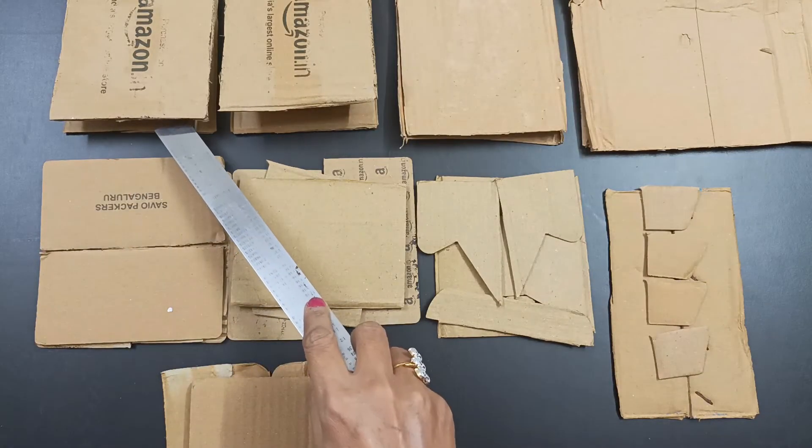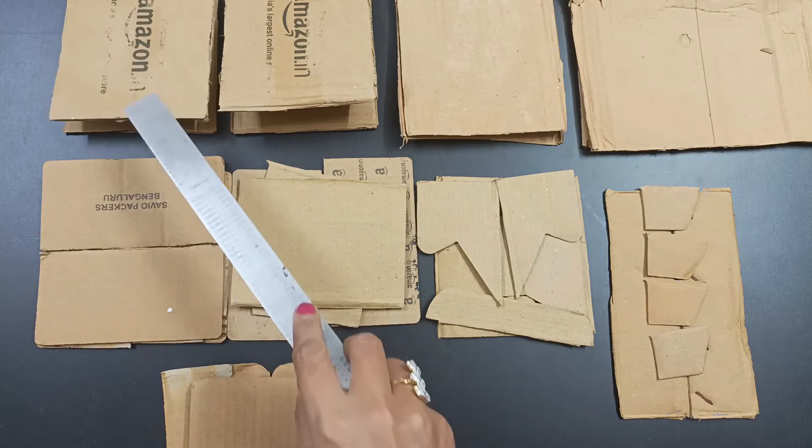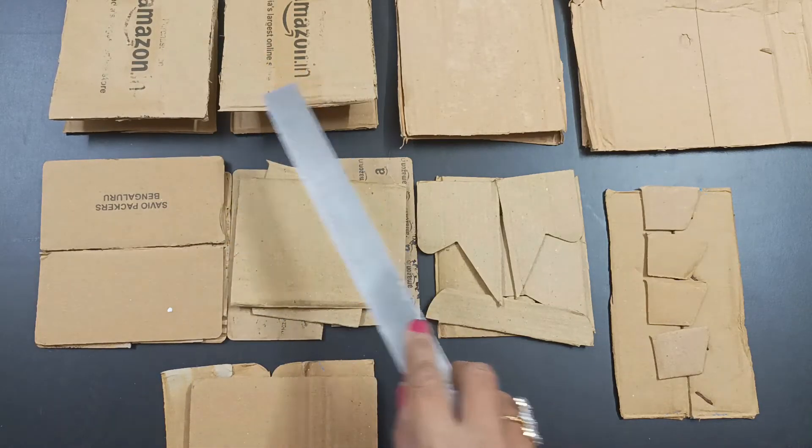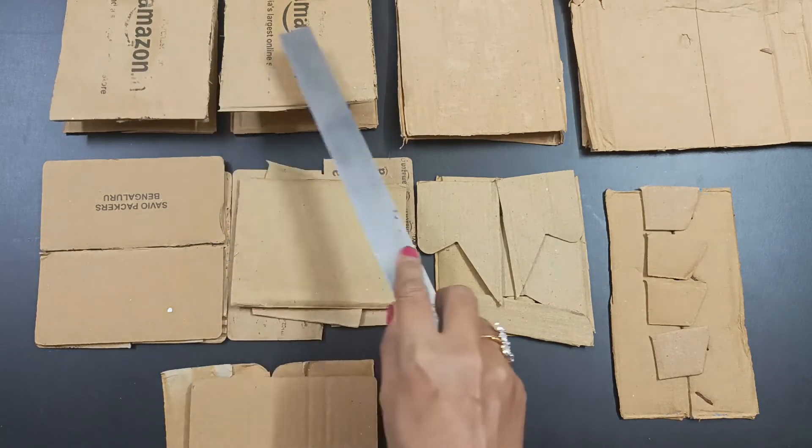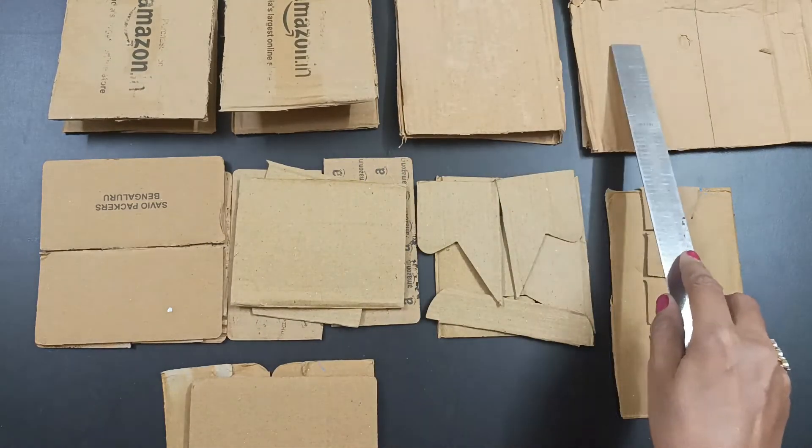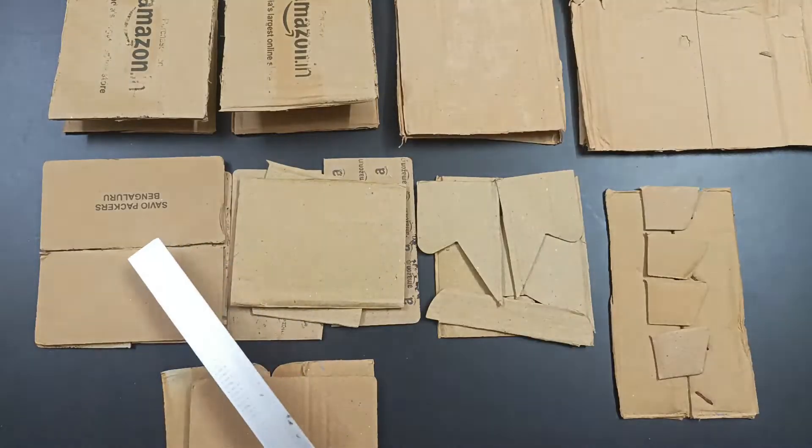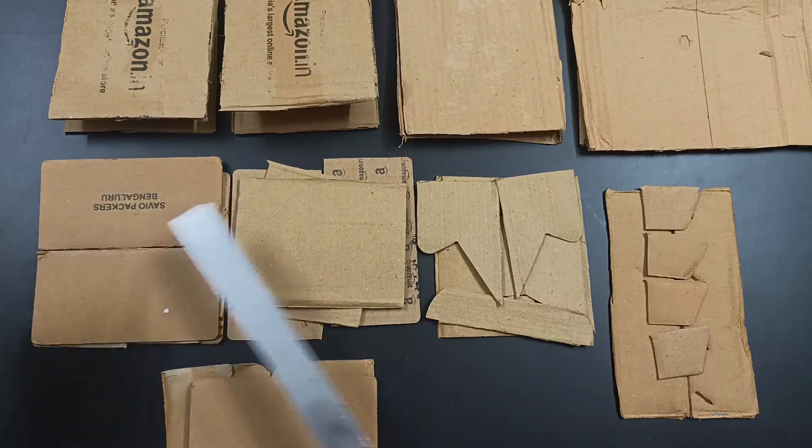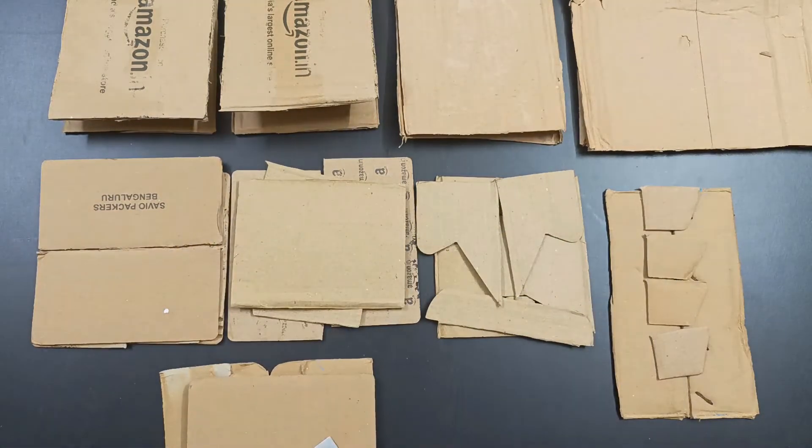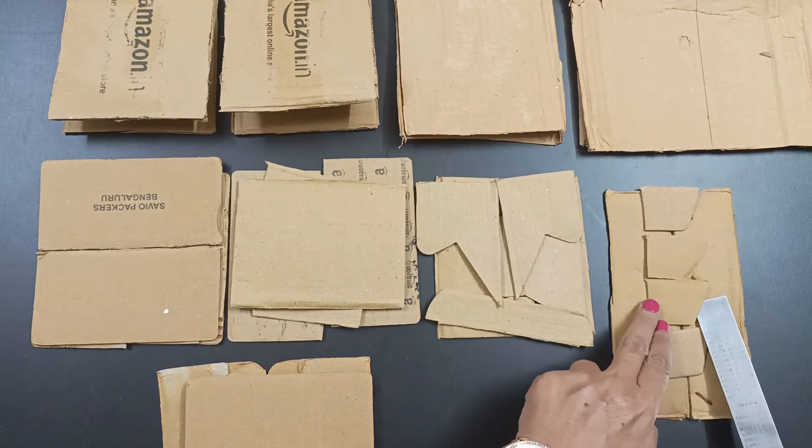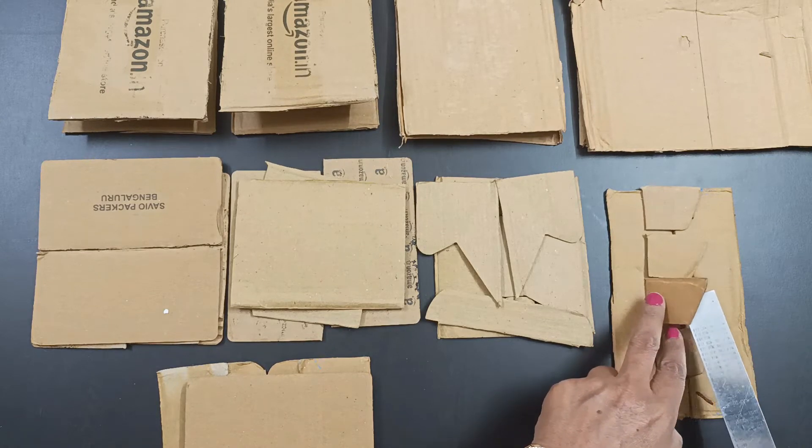As you can see, I have arranged these five pieces. Now I'm going to stick this. This will be for the side: one, two, three, four, and five, and this will be the fifth one. You can see that these are the side of the boxes which I'm not going to throw but I'll be using for the base.